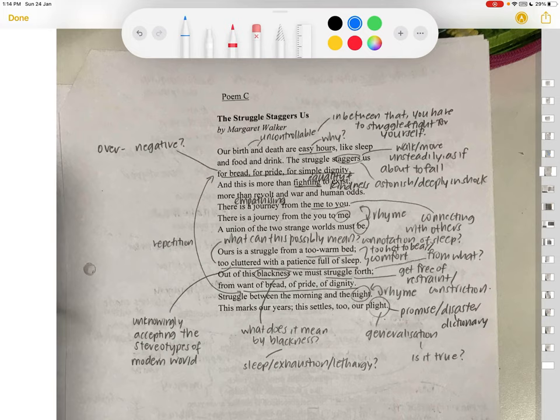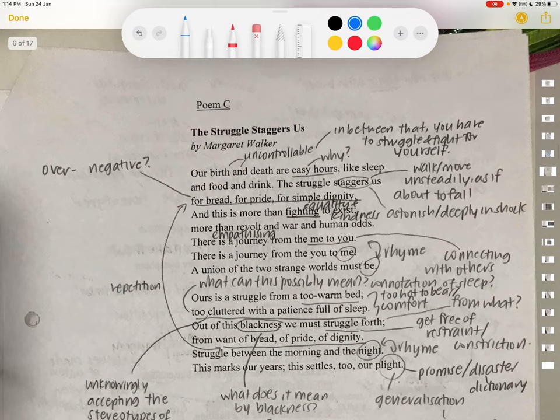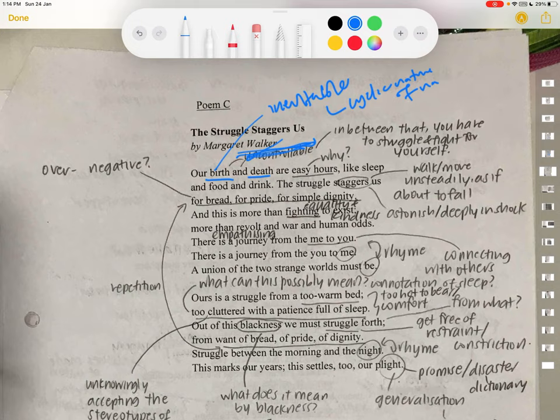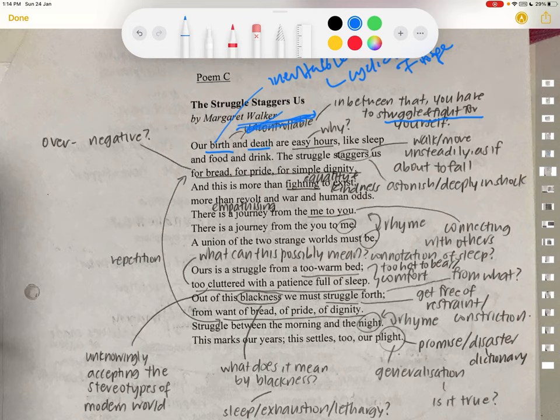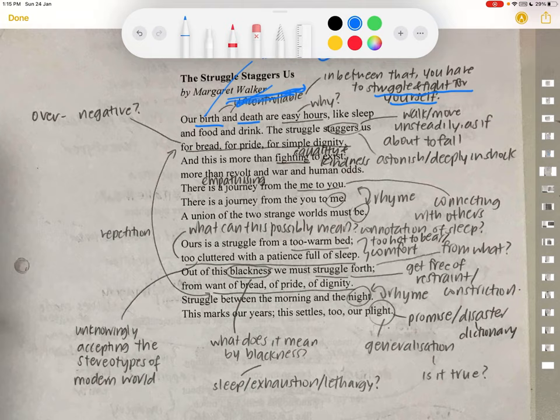Okay, so now we're going to look at the poem. The poem is fairly short. So let's begin. Our birth and death are easy hours. This is because birth and death are rather inevitable. Birthing and dying are rather inevitable. It's just a cyclic nature of life. But in between that, we actually have a lot of stuff happening which is like struggling to fight for yourself. It's easy to come and to go is essentially what Margaret Walker is trying to say. But what happens in between is another thing.